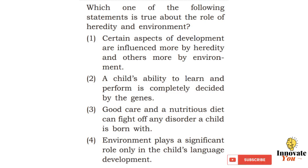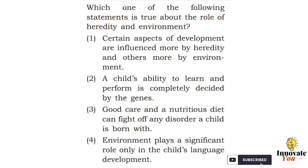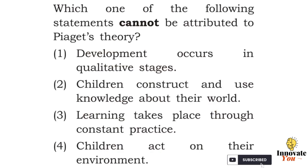Looking at option 2, a child's learning and performing activities is completely decided by his family genes. Moving to option 3, good care and a proper nutritious diet can help fight any disorder a child is born with. Option 4 states that the environment around a child only helps in the development of his language. The correct answer is option 1: certain aspects of development are influenced more by heredity and others more by environment.